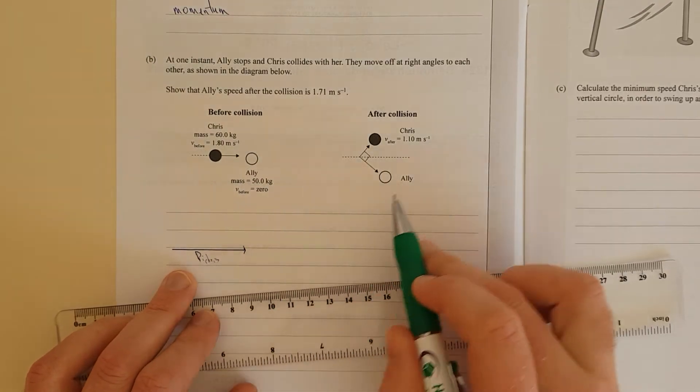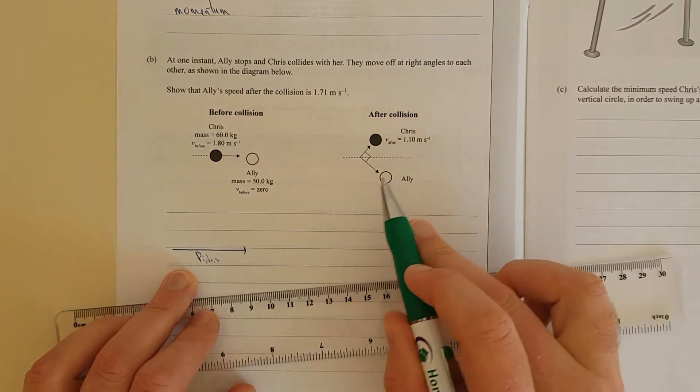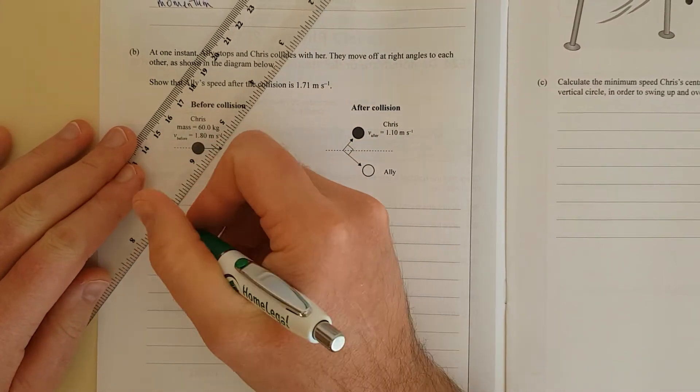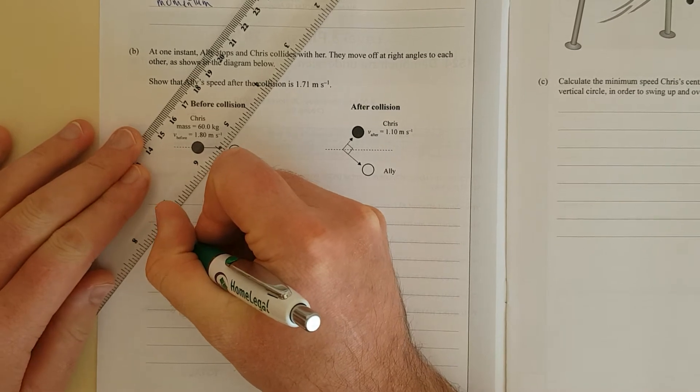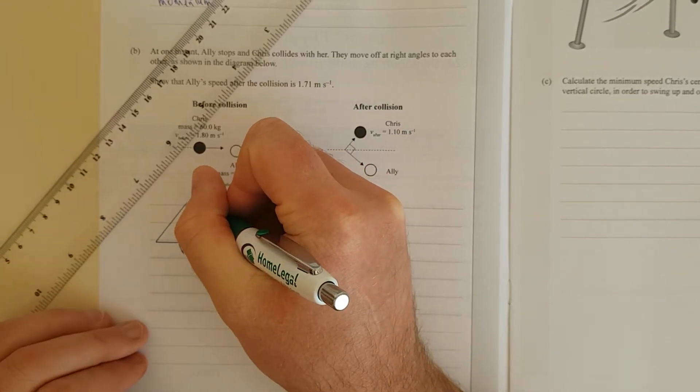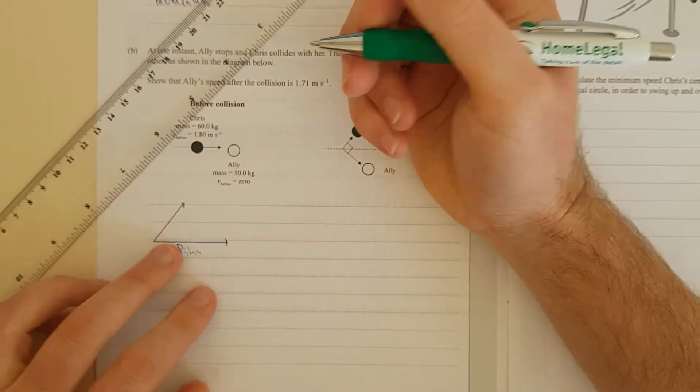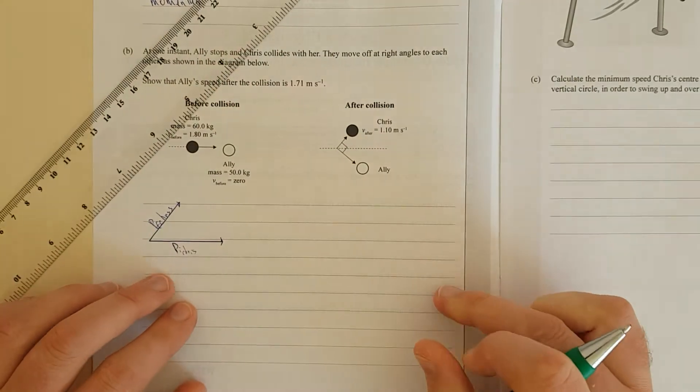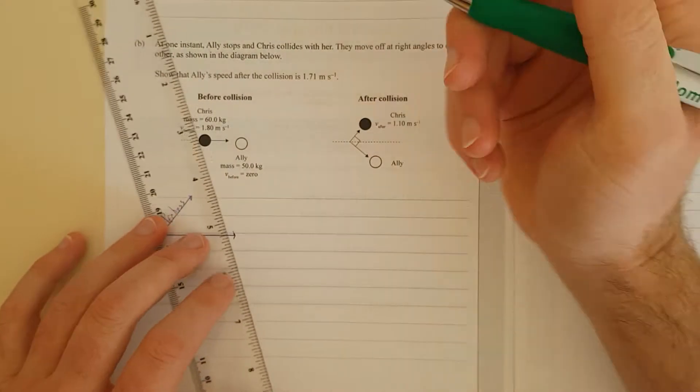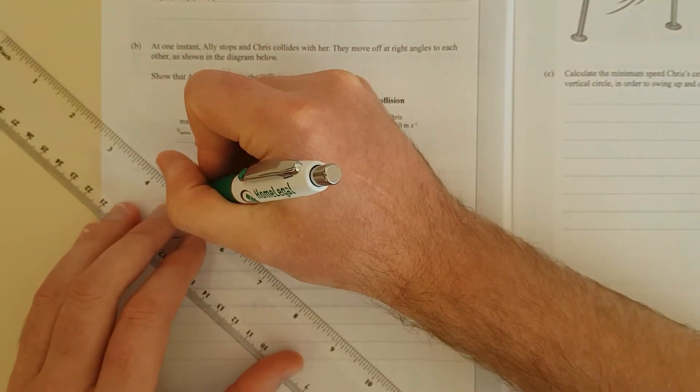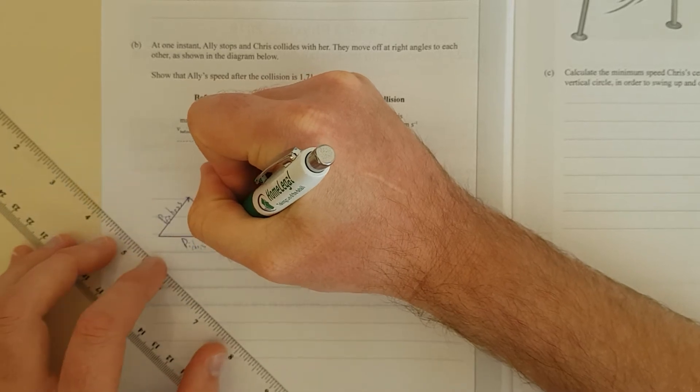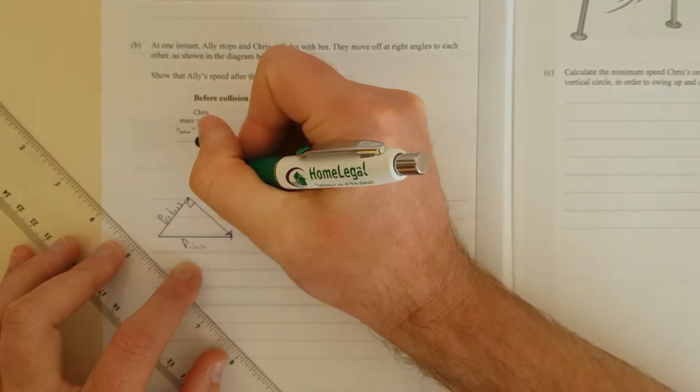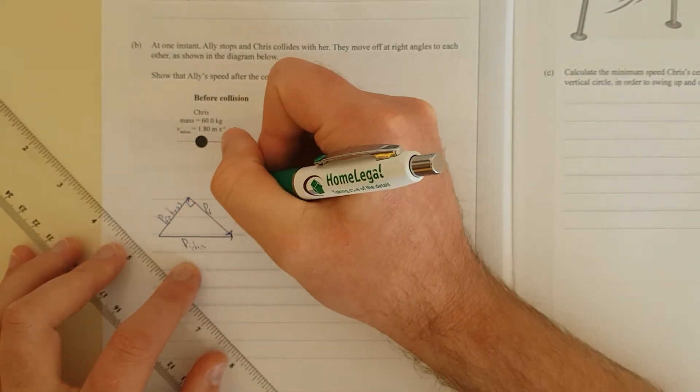That should be equal to the final momentum, so Chris and Ali combined, because initially all the momentum in the system was this. So finally all the momentum in the system should be that. These two should add together to create the initial. If we go up Chris's final momentum, that's also a vector. This is p final Chris, and Ali's momentum is 90 degrees, so we have a 90 degree angle here.